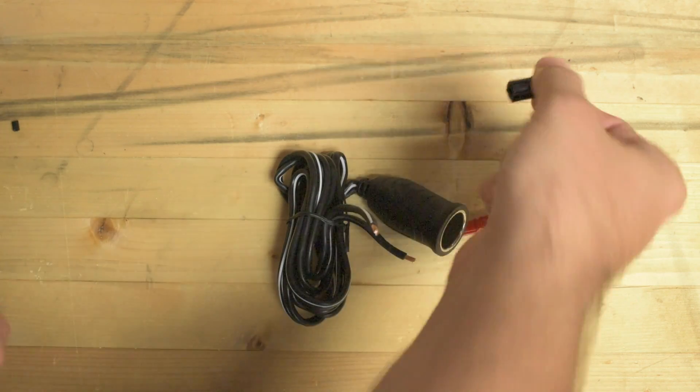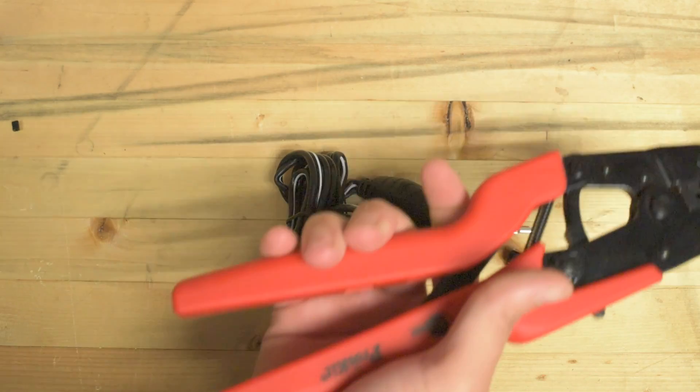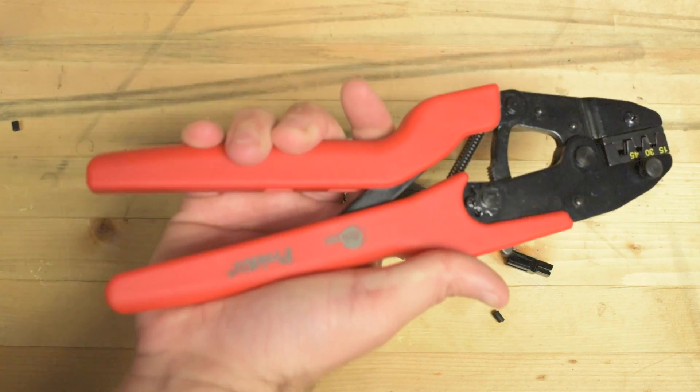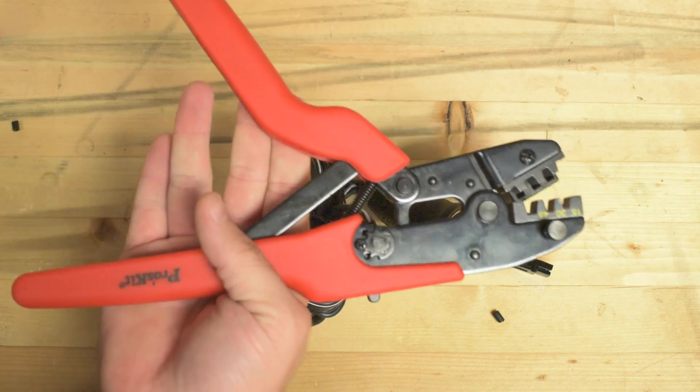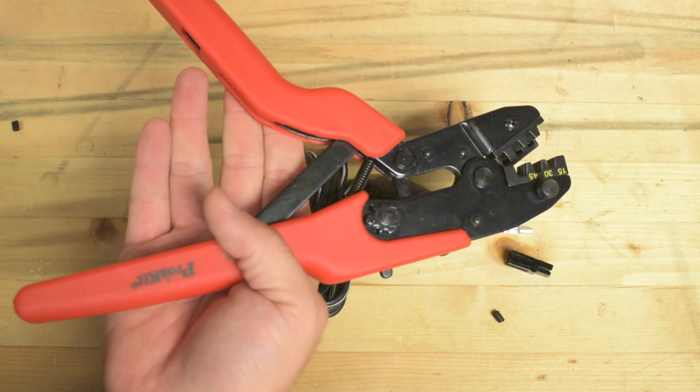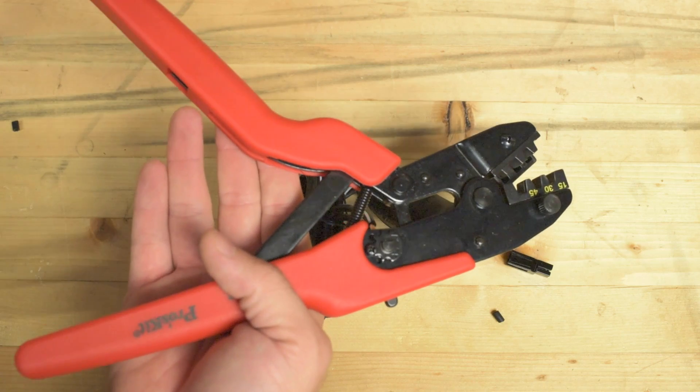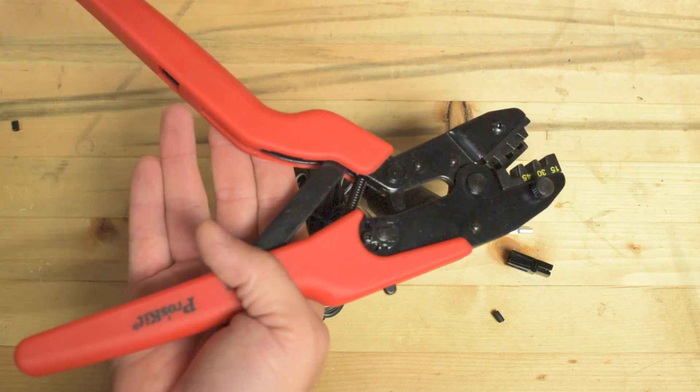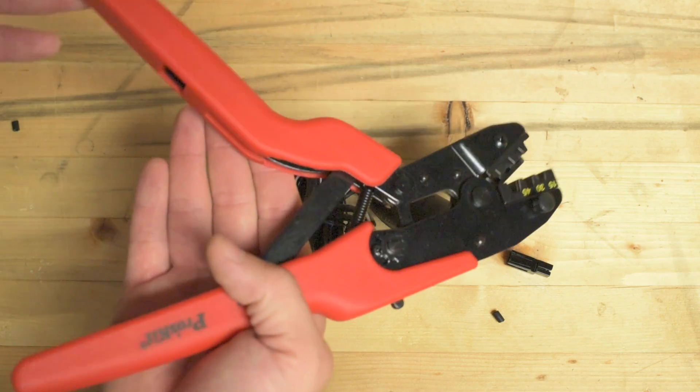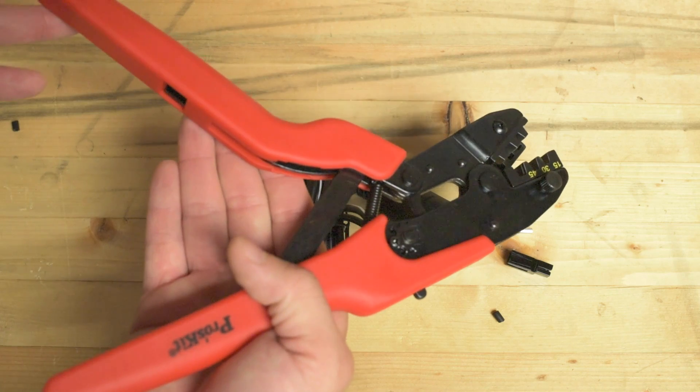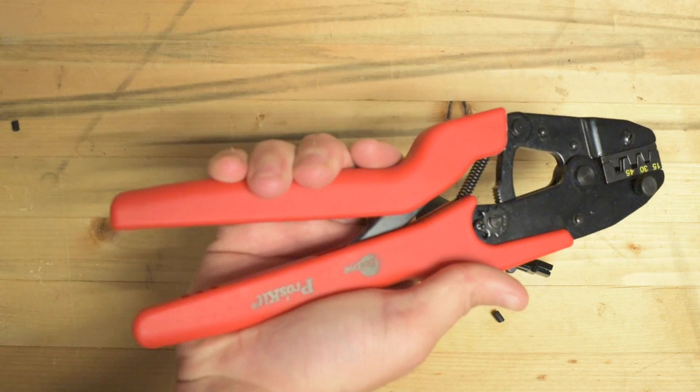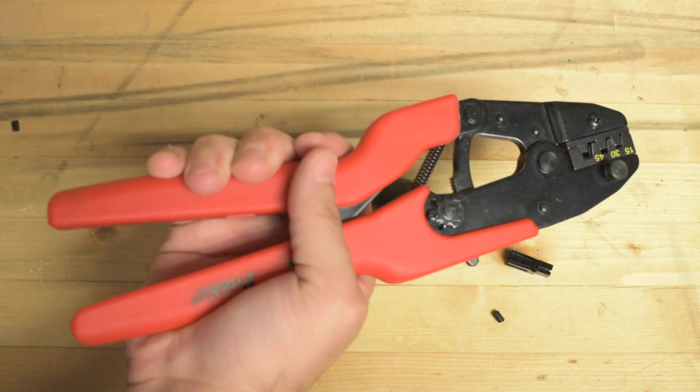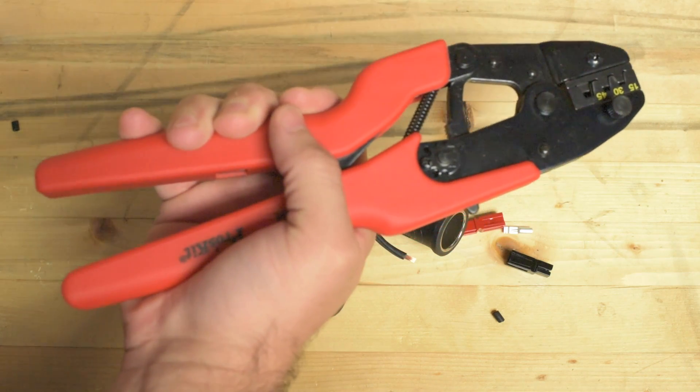So I've got these ratcheting crimp tool things. This is the crimp tool that the people selling the Anderson connectors on Amazon recommend. It's a little more expensive than the one that's more popular, but I figure if they recommend it, it's probably pretty good. I like to buy quality tools - the poor man pays twice, they say. Usually that's accurate.